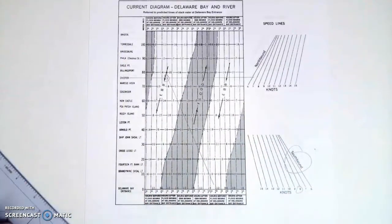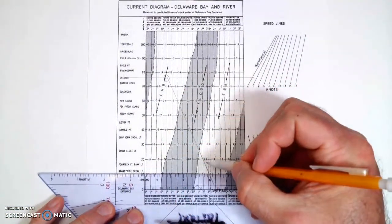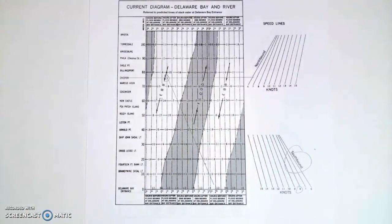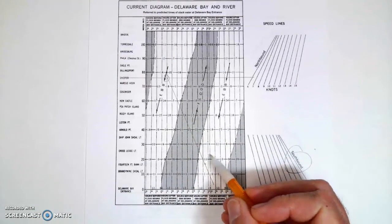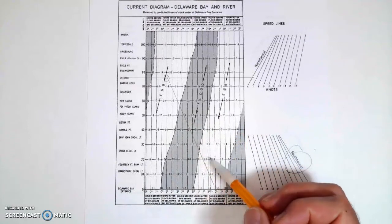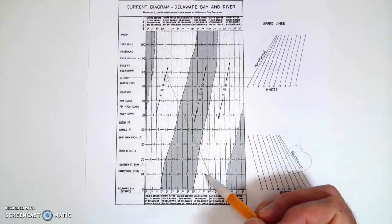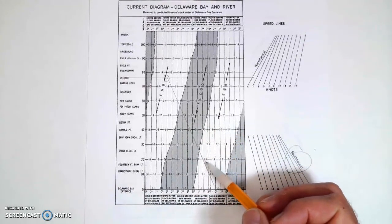So now I want to find 14 foot bank and here's 14 foot bank here. So right about here. So then the question is what current will I be expecting at that point? And if you look here, you can see that we're in this ebb area and we're going to be between 1.3 and 1.1 closer to 1.3.